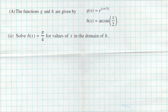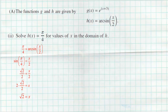For part two, solve h of x equals pi over 4 for all values of x in the domain of h. I replace h of x with pi over 4: pi over 4 equals arc sine of x over 2. I use what I call the old switcheroo — switching inputs and outputs by turning the inverse sine into a regular sine. So sine of pi over 4 equals x divided by 2. Sine of pi over 4 is radical 2 over 2 from the unit circle, and multiplying both sides by 2 gives x equals radical 2.